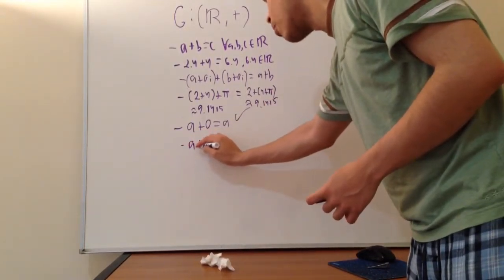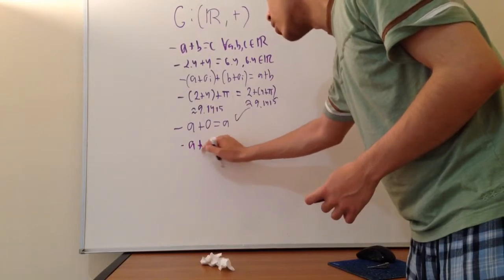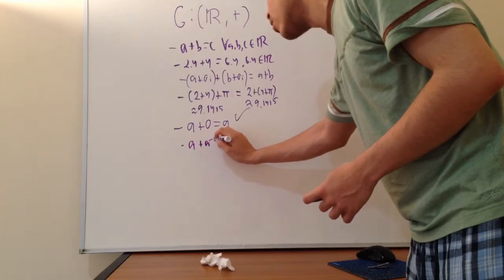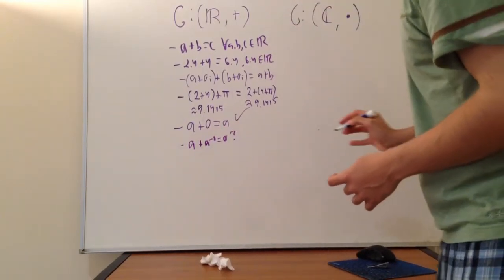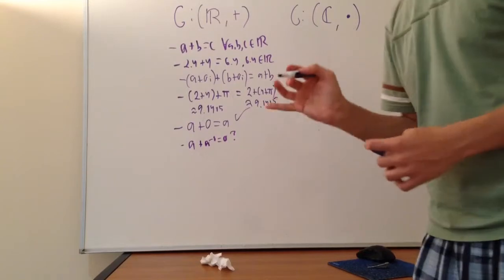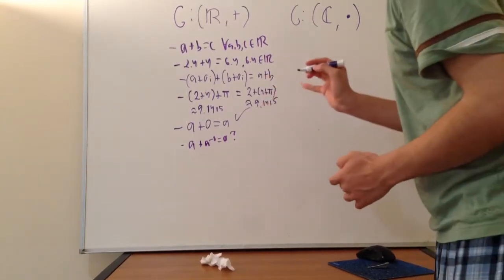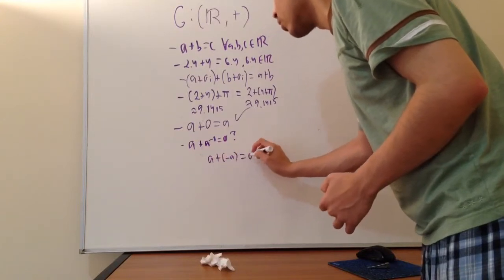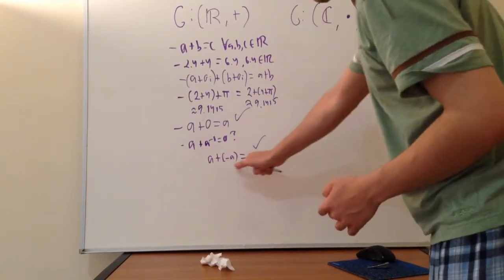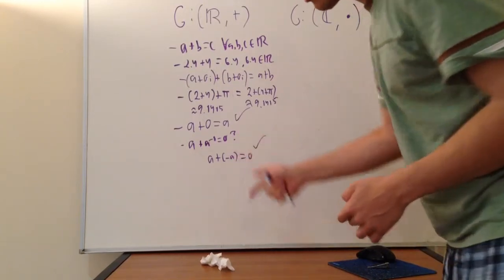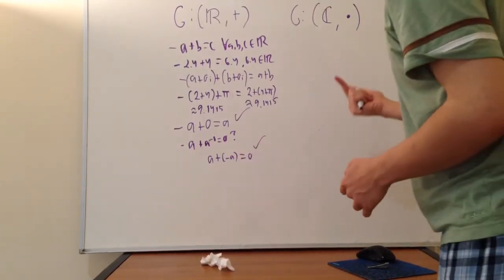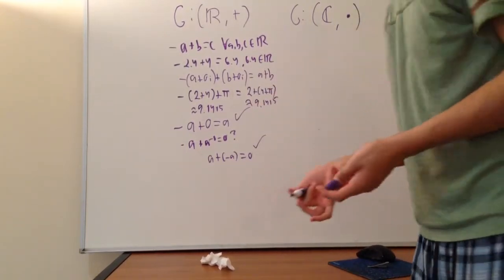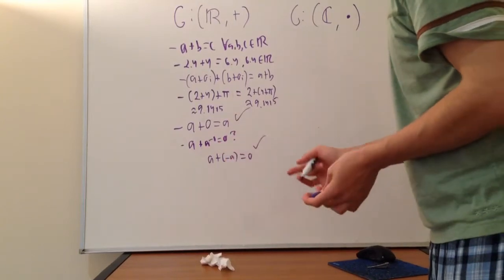Now we have the final property, which is: is there an inverse for every element? A + A⁻¹ = 0. Does this hold? In my first video I claimed that if you have A + (-A), that always equals 0. We know this to be true. We know there are negative numbers for every positive number for the real numbers. 2 + (-2) gives you 0. π + (-π) gives you 0. So there is indeed an inverse for every single element.